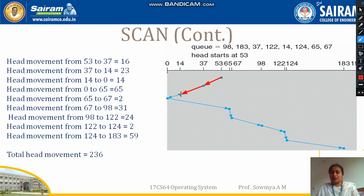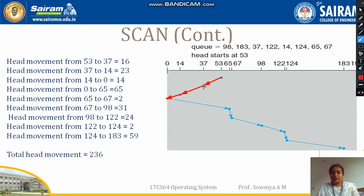Since this is the SCAN method, if there are no values between 14 and 0, the head still moves from 14 to 0. So the head moves from 53 to 37, then 37 to 14, and from 14 it moves to 0. The head movement from 14 to 0 is 14.